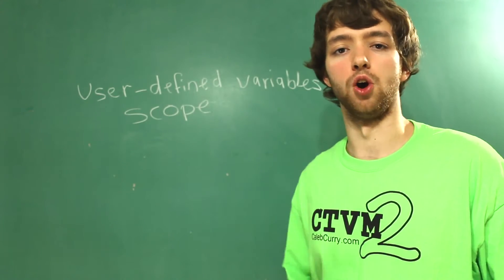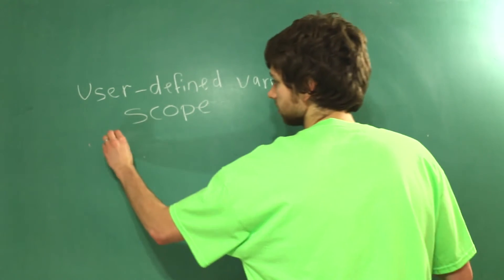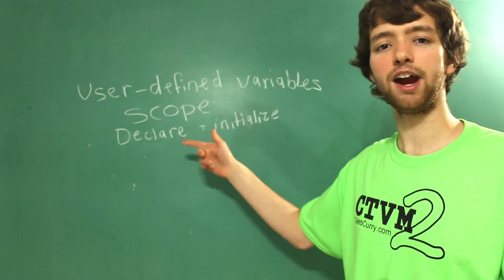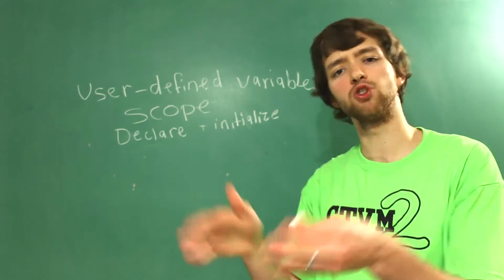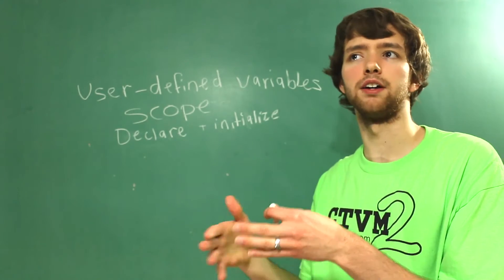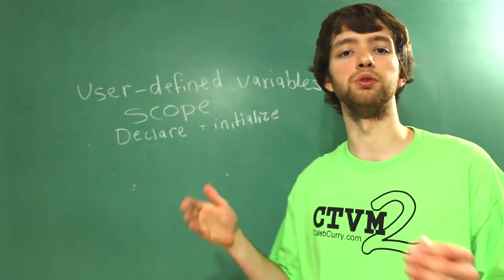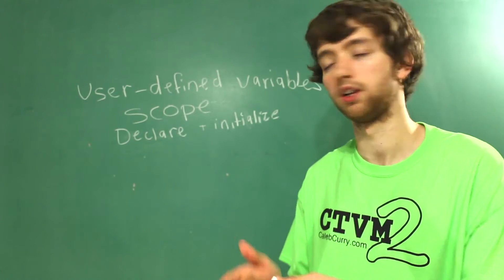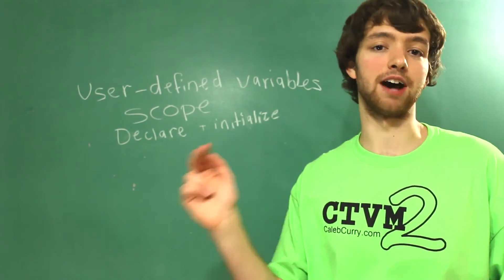There's two more terms you're going to need to know: declare and initialize. Essentially, declaring a variable is telling MySQL, 'Hey, here's this variable. I don't exactly know what the data is going to be inside of this variable, I just know that this variable needs to exist because I'm going to use it in the future.' Initializing is when you give that variable a value.